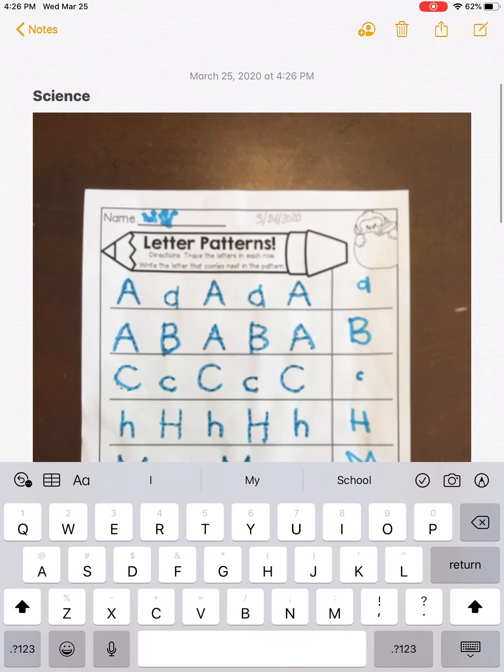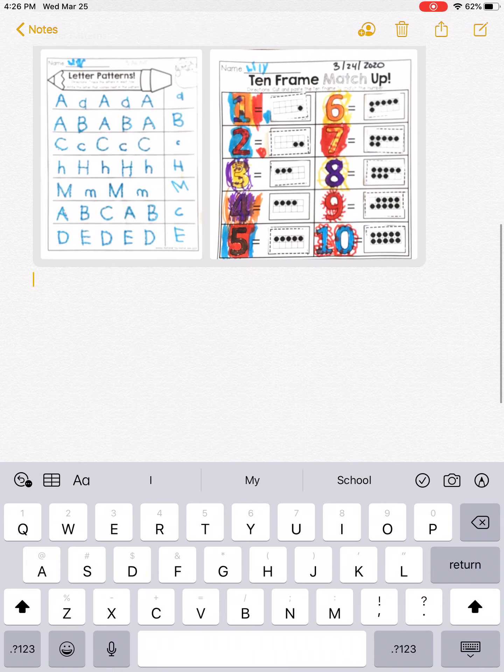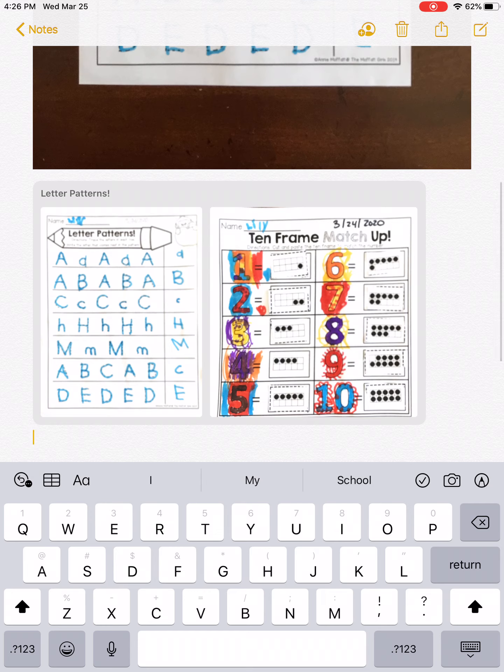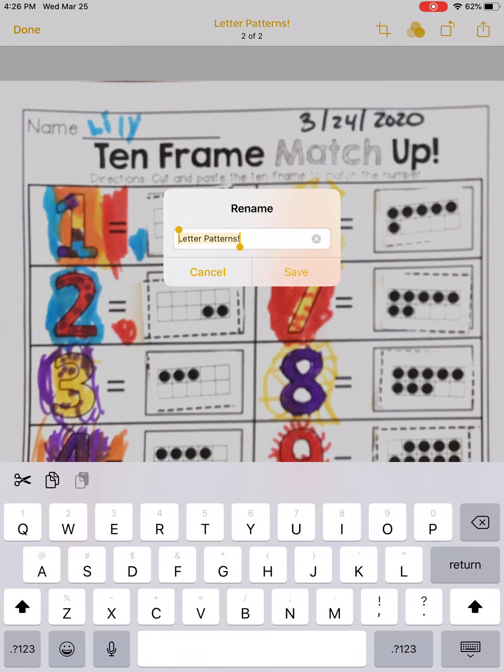Okay, so that's how you scan them and get them inside of the Notes app. Now you just have to send them to your teacher. So before you hit the send button, here's what I suggest. Now if you click on this assignment, it automatically named them Letter Patterns because that was on the first page. But if you click on those words, you can rename it.